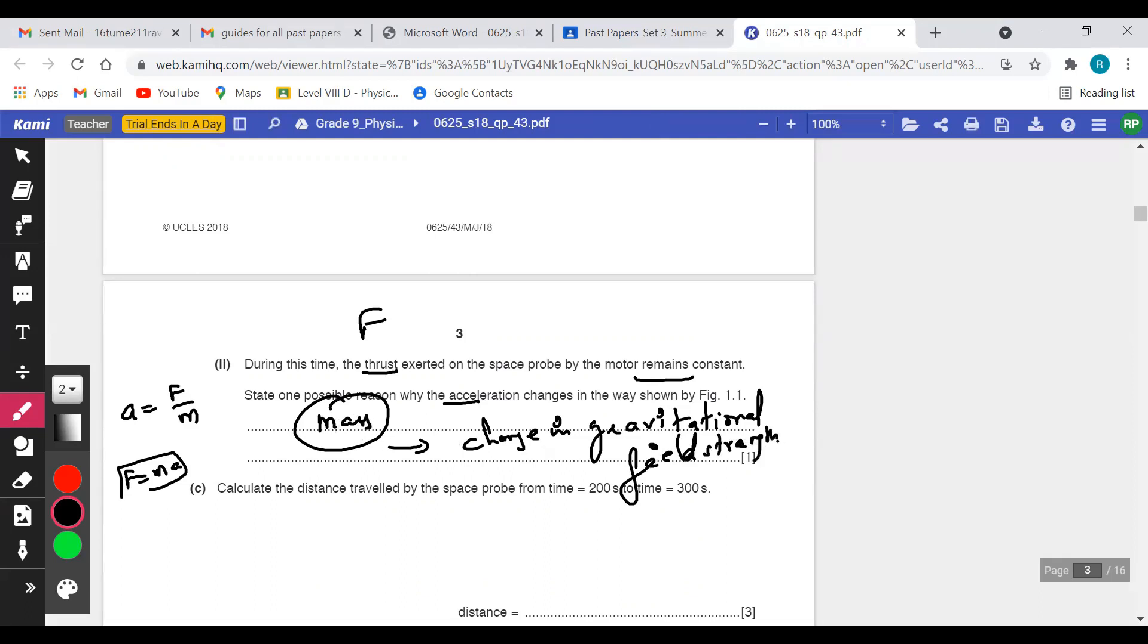Mass will always be constant, but weight - that could be the definition. Based on that, obviously the acceleration also varies because acceleration is proportional to mass, which is nothing but the weight.